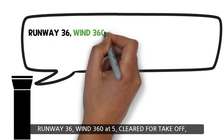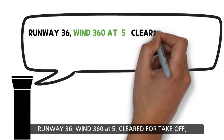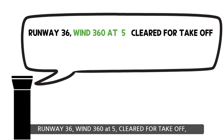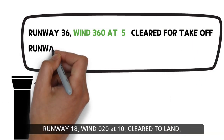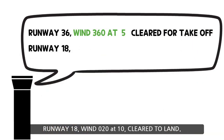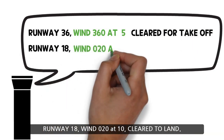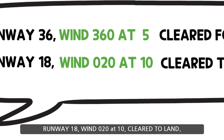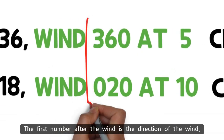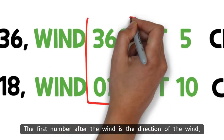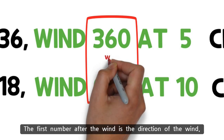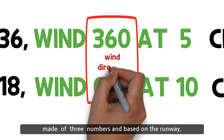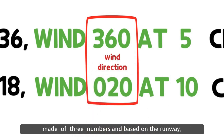Runway 36, wind 360 at 5, cleared for takeoff. Runway 18, wind 020 at 10, cleared to land. The first number after the wind is the direction of the wind, made of three numbers and based on the runway.